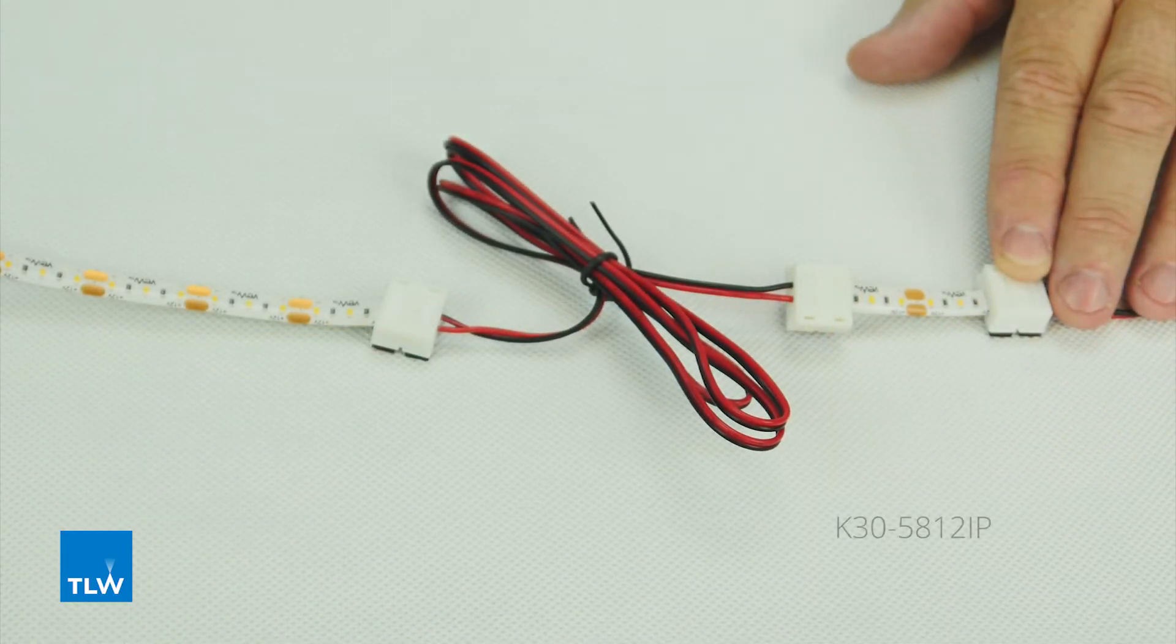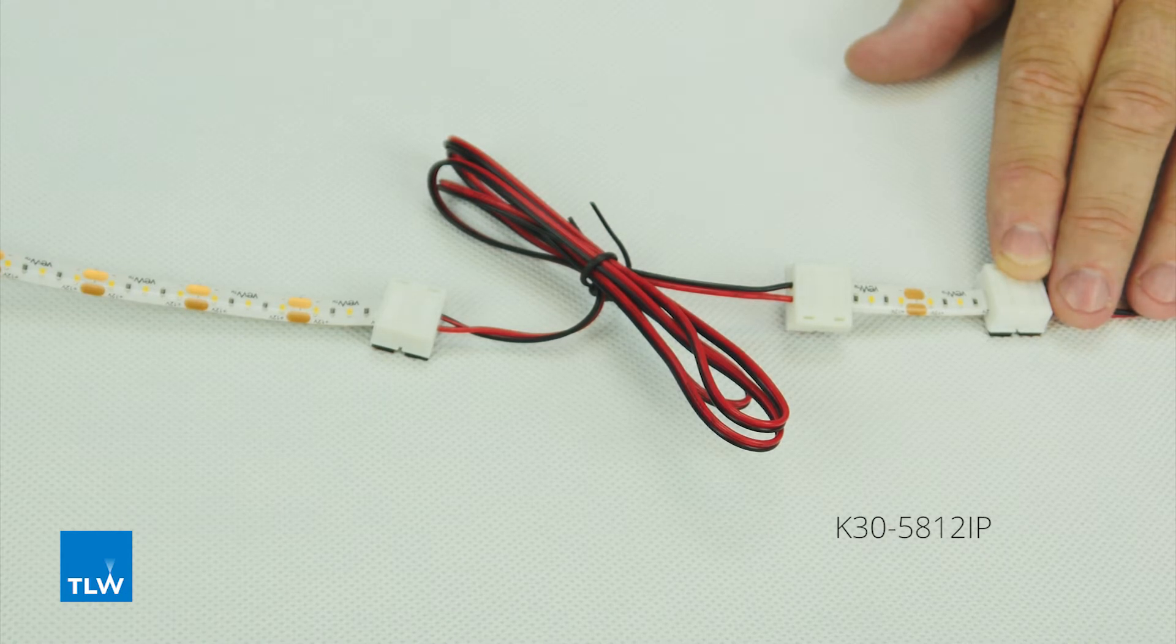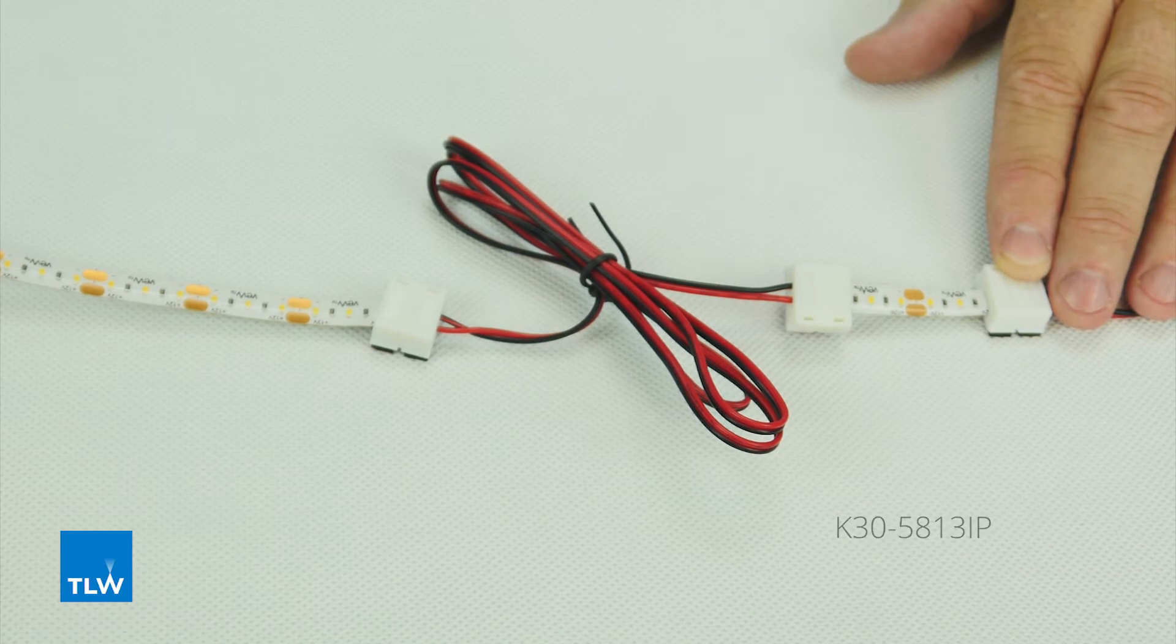We also have two link leads for our IP rated tape: the K30-5812 IP which is one metre long, and the K30-5813 IP which is two metres long.